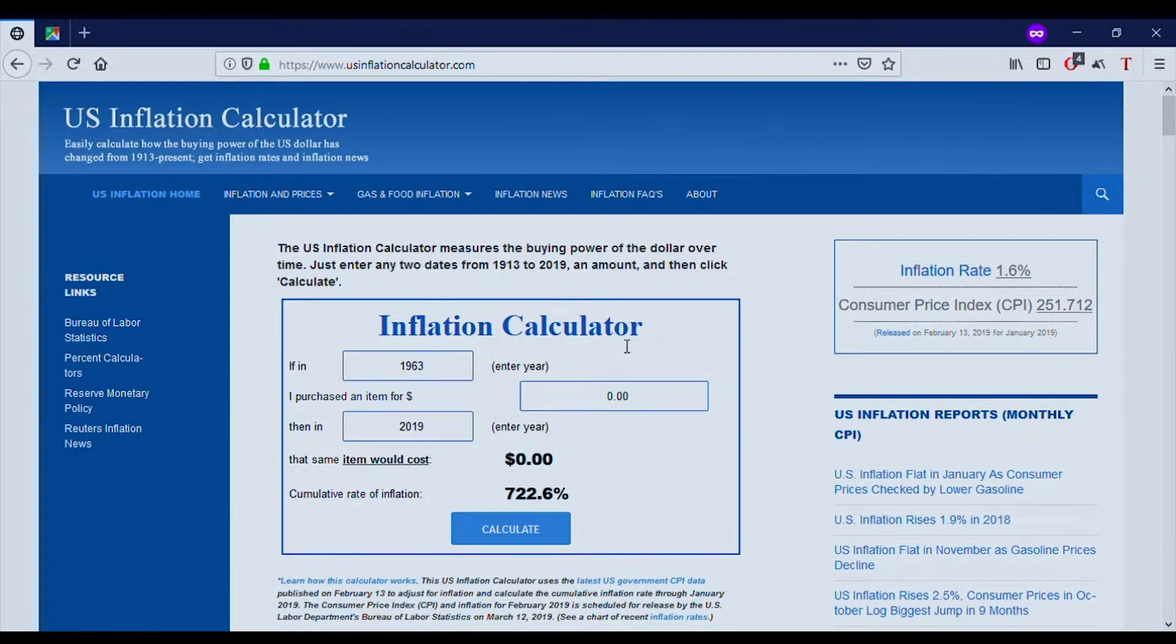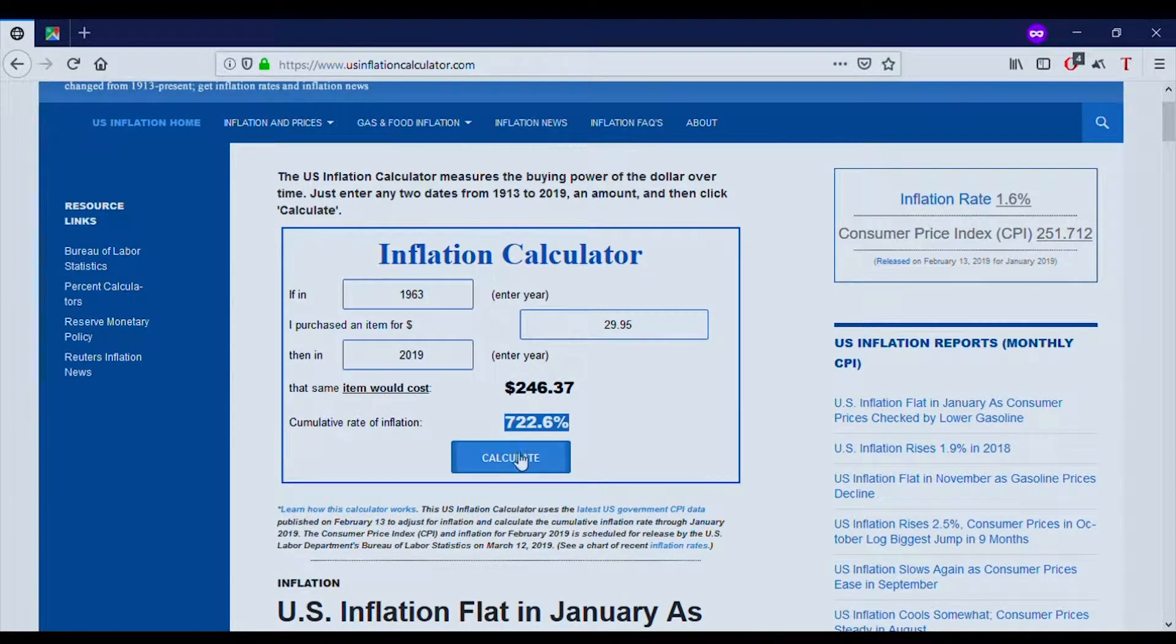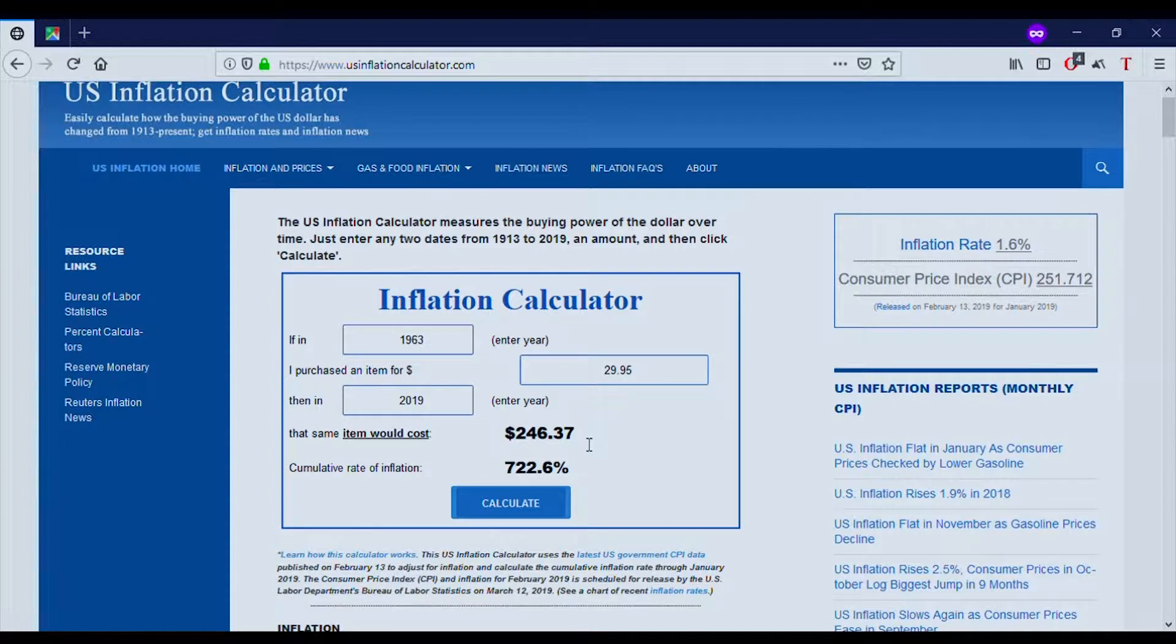Heading now to the inflation calculator, we put in 1963 as the year and I'll enter $19.95. Wow, that's actually almost ten times the price. It's $164.11. If it was fully built for us, that's $246 dollars. The inflation rate is 722 percent, which is absurd.